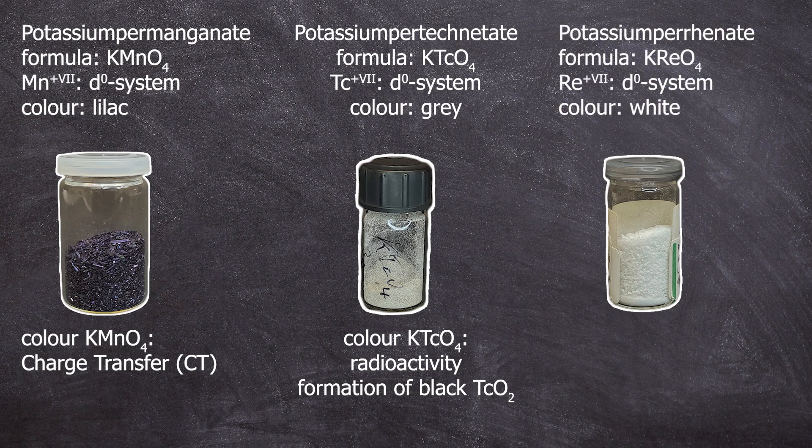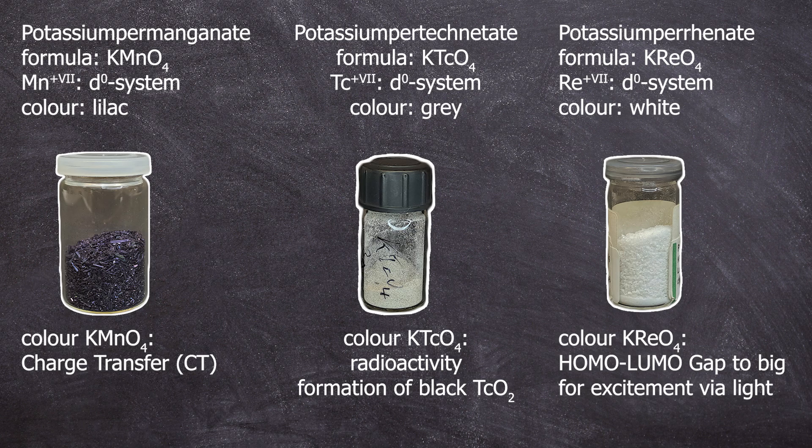Perrhenate is snow white because rhenium in the +7 oxidation state is not a good electron acceptor. Consequently, the electrons remain closer to the oxygen atoms compared to the previous salts, requiring more energy — shorter wavelengths — to excite them. In technical terms, the HOMO-LUMO gap is too large for electrons to be excited by electromagnetic radiation in the visible range.